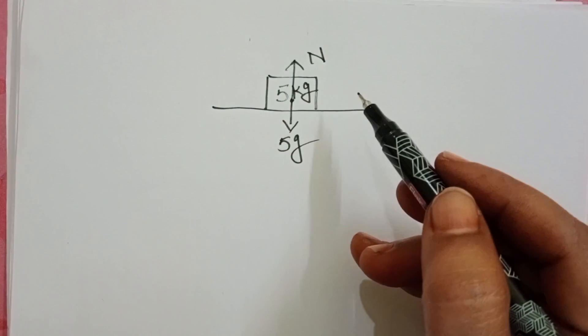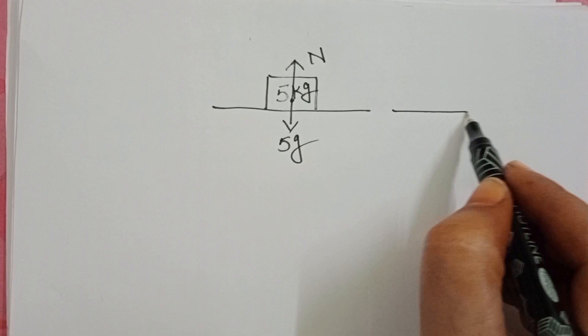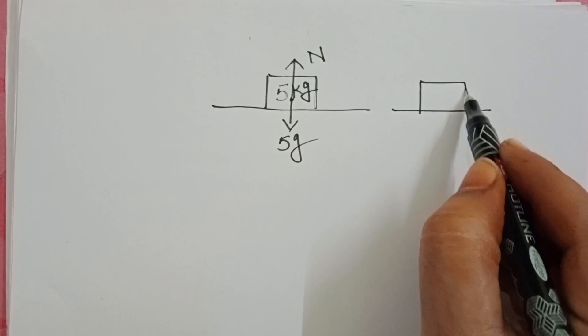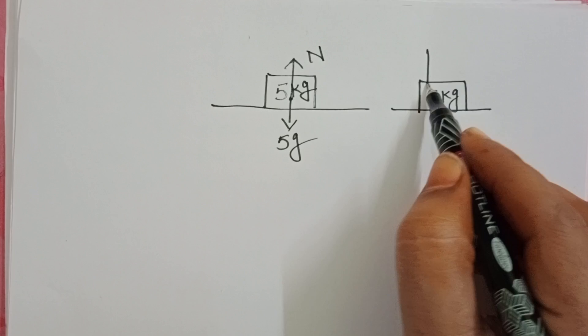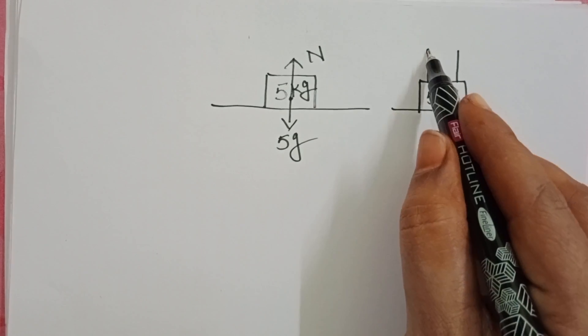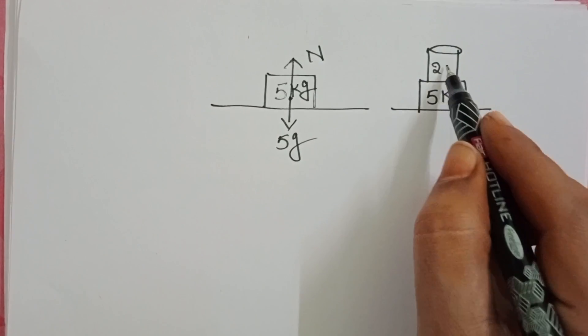This block is in equilibrium position. But after that, a cylinder of mass 25 kg is placed on top of this wooden block.